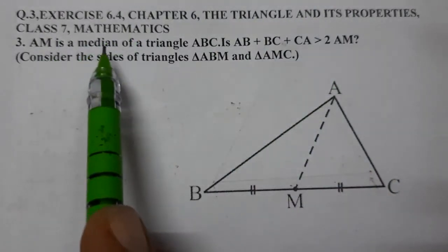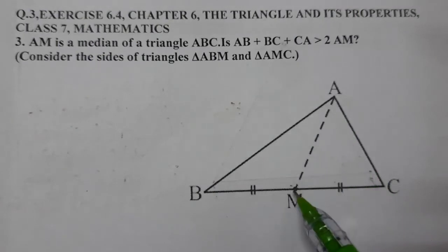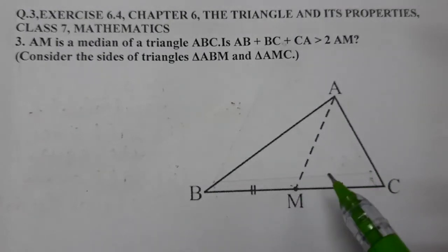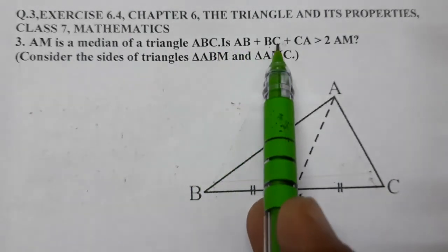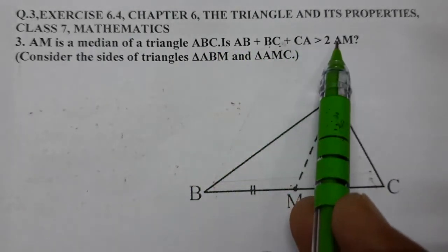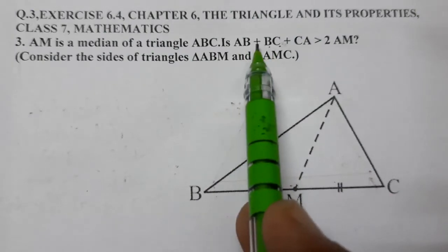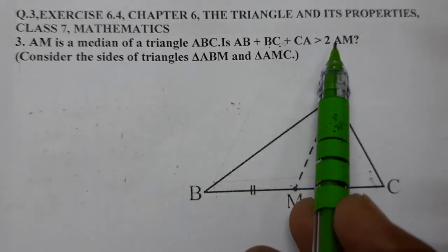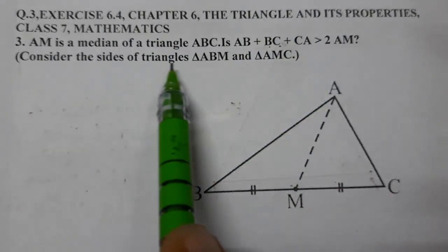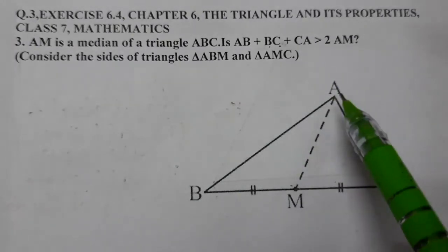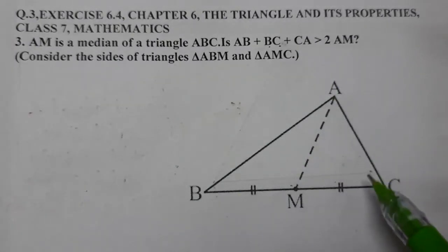AM is a median of a triangle. You know what is median? A median of a triangle divides the opposite side in two equal parts. So BM equals CM. Is AB plus BC plus CA greater than 2 AM? We need to see this. Consider the sides of triangle ABM and triangle AMC.